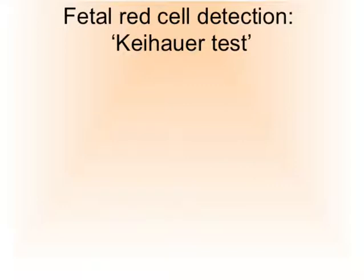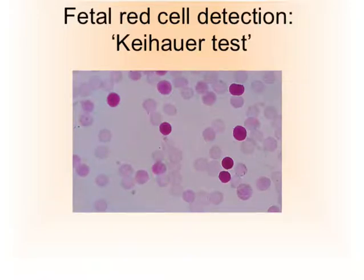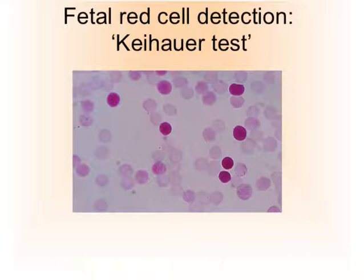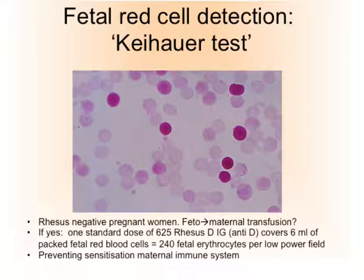The fetal red cell detection test — the so-called Kleihauer-Betke test: under the microscope we see maternal red blood cells and a few dark purple fetal red blood cells, which still contain the nucleus and are easily discernible. We can count the number of fetal red blood cells and the laboratory can quantify how many millilitres of fetal red blood cells have entered the maternal circulation. This makes it possible to check whether the standard dose of Rhesus D anti-D was sufficient — the strategy to prevent sensitization of the maternal immune system, which could cause Rhesus antibodies in the next pregnancy crossing the placenta.